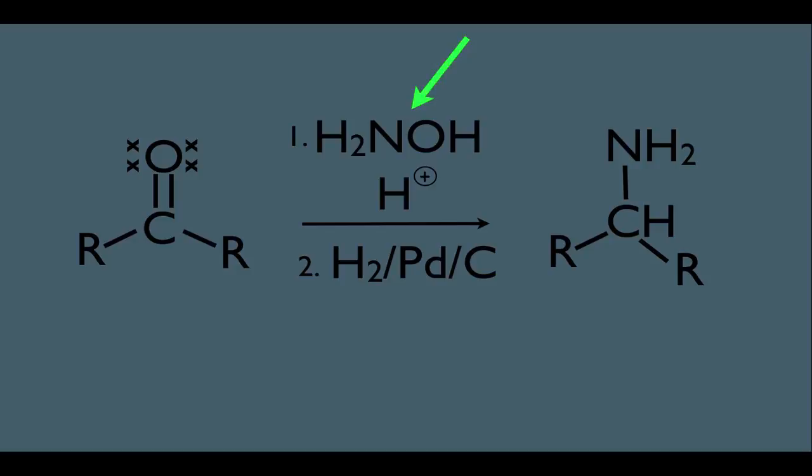But we actually have another alternative for this reaction. Instead of using the H2/Pd/C in the second step, we can use this instead: NaBH3CN. This is specifically called Borsche reduction, but we'd like to know that this alternative exists just in case it's on your exam.